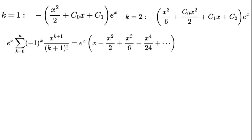For the main terms: e to the power of x times the sum from k equals 0 to infinity of negative 1 to the power of k times x to the power of k plus 1 over (k plus 1) factorial equals e to the power of x times (x minus x squared over 2 plus x cubed over 6 minus x to the power of 4 over 24, and so on).